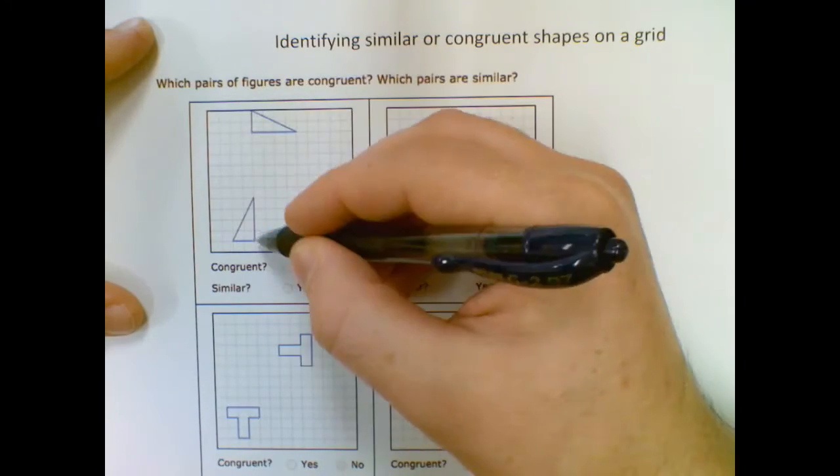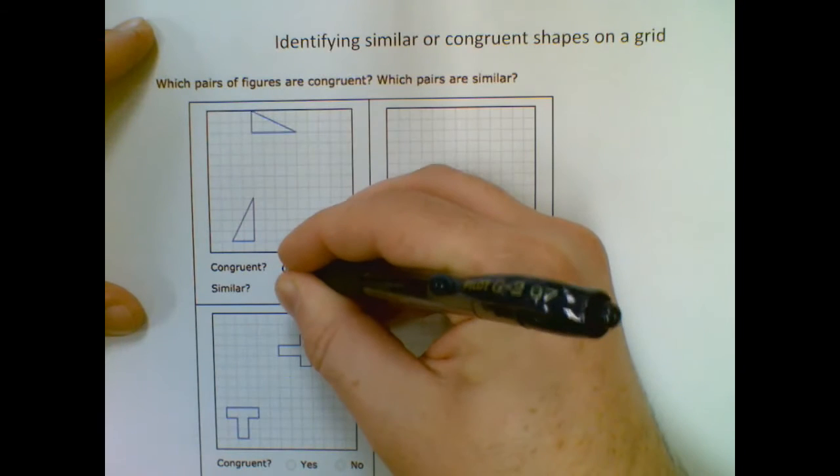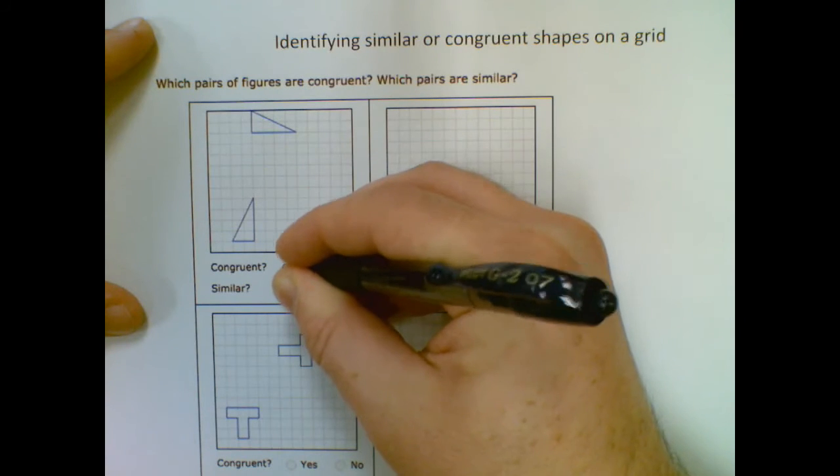So these ones will, they're both two by four triangles that are right triangles, so they are congruent, which makes them automatically similar.